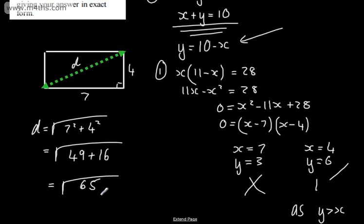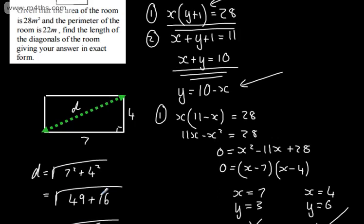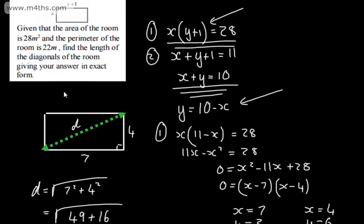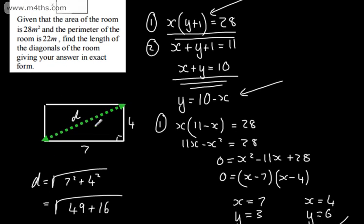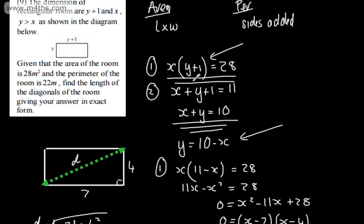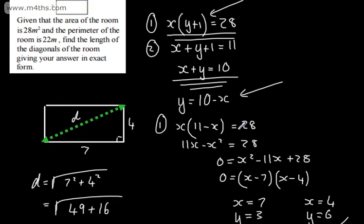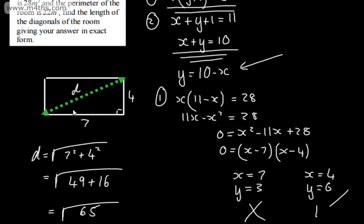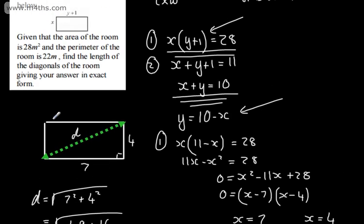So the square root of 65 is the exact length of the diagonal of that rectangle. We solved a set of simultaneous equations — one linear, one non-linear — considered which solution was valid, and then plugged in the numbers to find the answer.